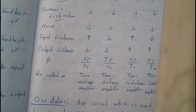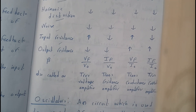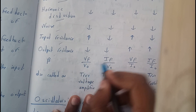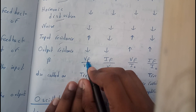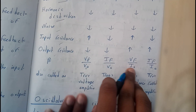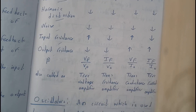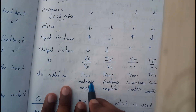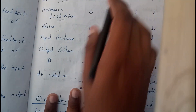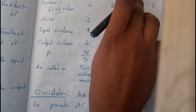The feedback ratio beta for the four types: voltage series — VF by V naught; voltage shunt — IF by V naught; current series — VF by I naught; current shunt — IF by I naught. Alternative names: voltage series is true voltage amplifier; voltage shunt is trans-resistance amplifier; current series is trans-conductance amplifier; current shunt is true current amplifier.